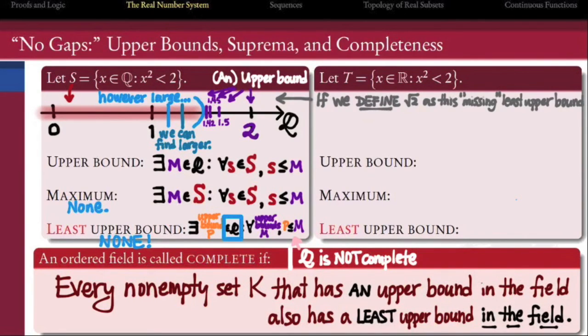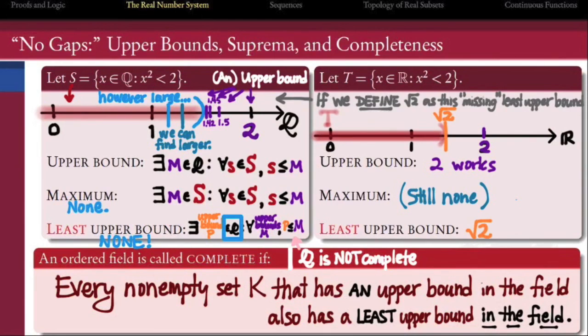So if we define the square root of 2 as the missing least upper bound from our example on the left, then the subset t of the reals whose square is less than 2 still has an upper bound. It still doesn't have a maximum, but now it does have a least upper bound, the number which we call the square root of 2.